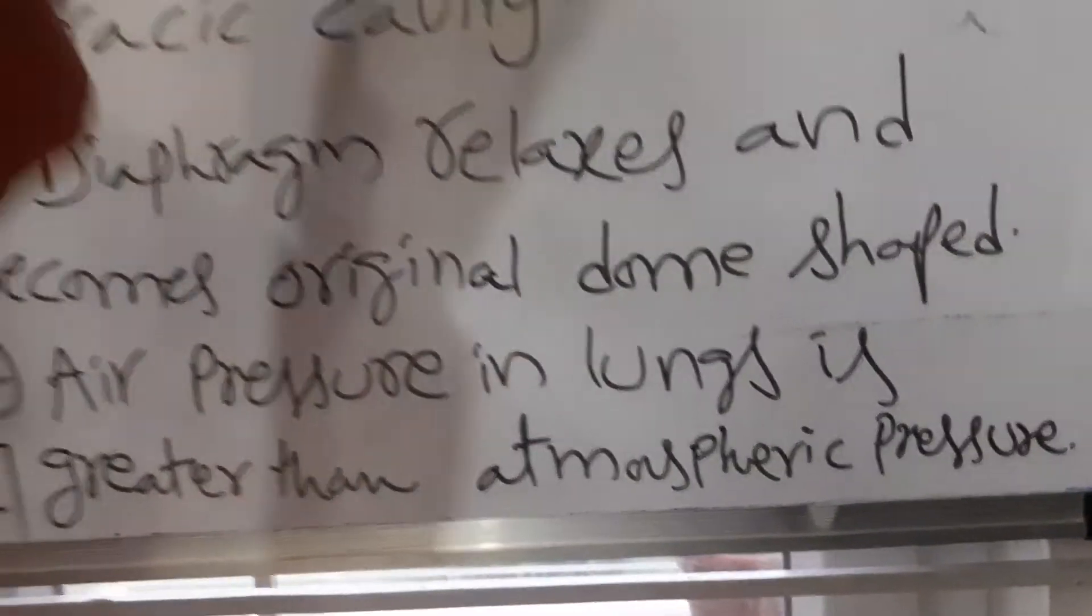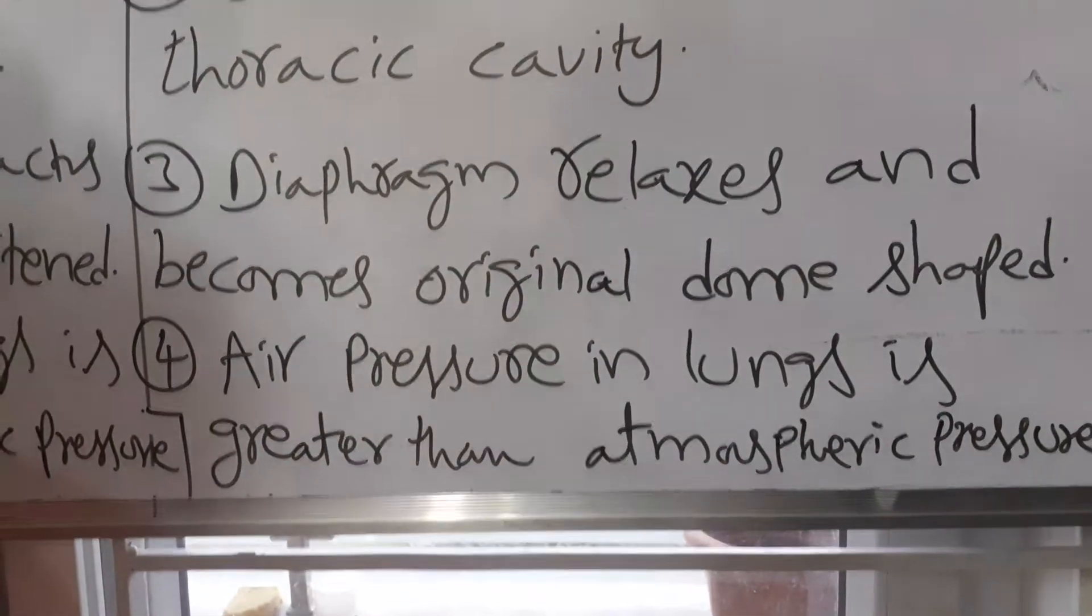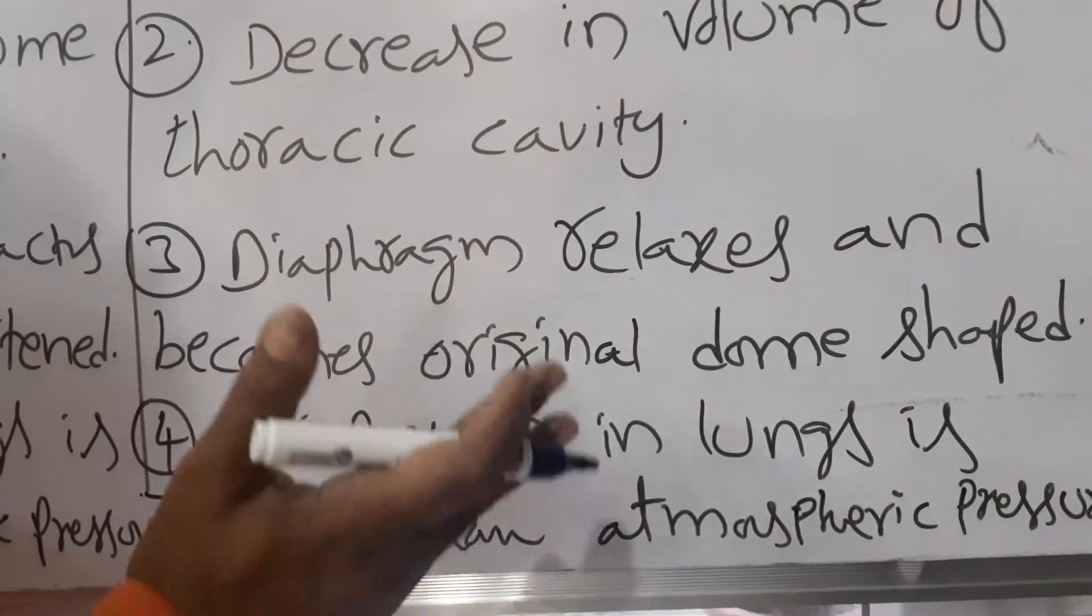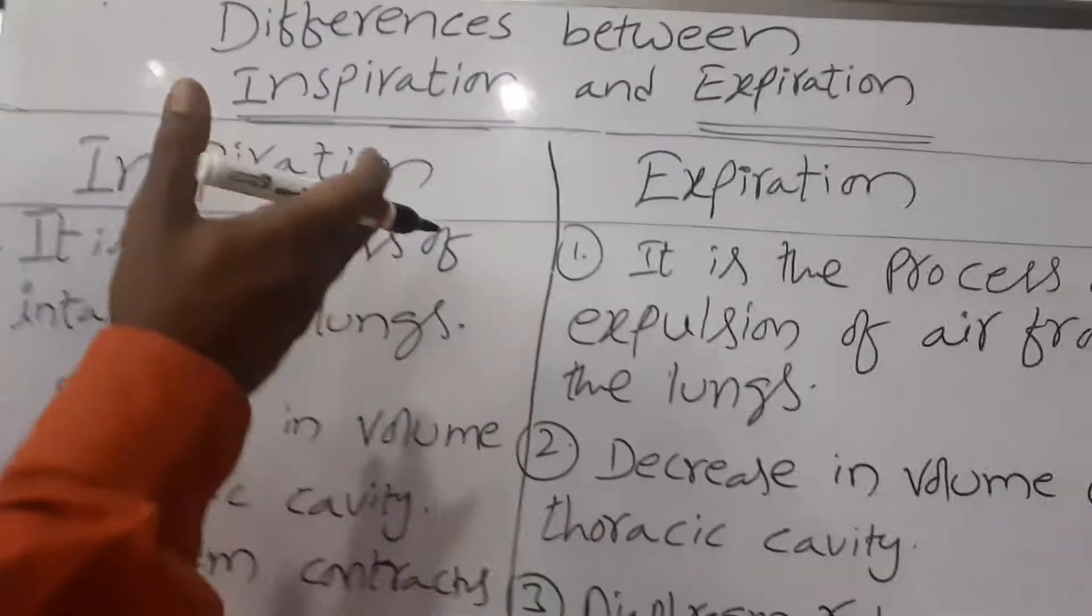During expression process, air pressure in the lungs is greater than atmospheric pressure. So, air comes out of the lungs. For better understanding of this topic,